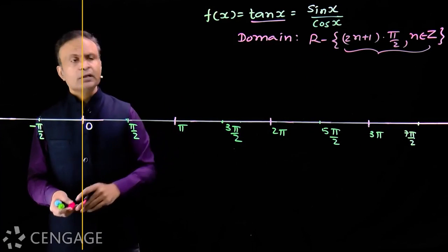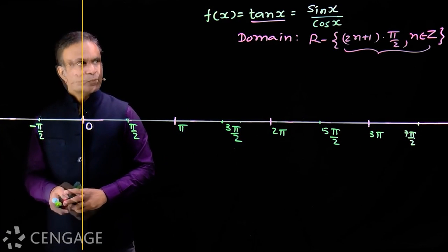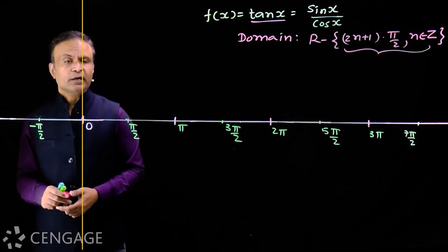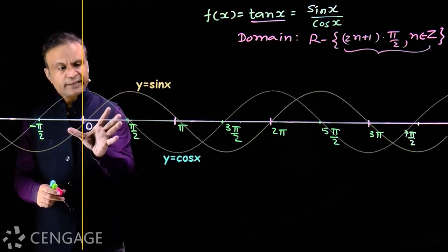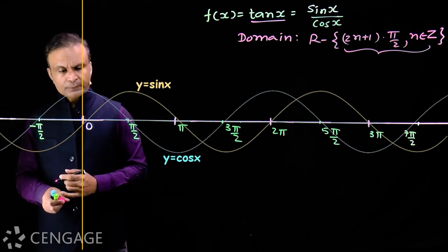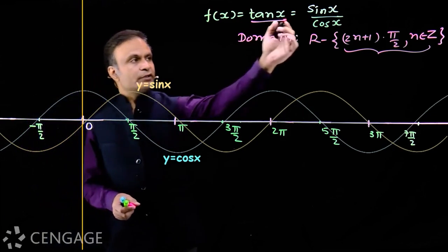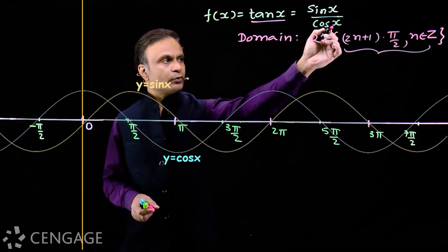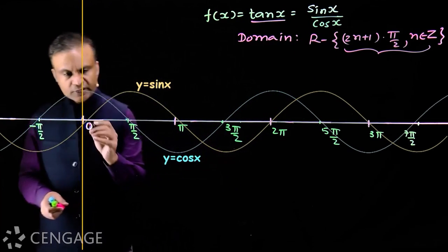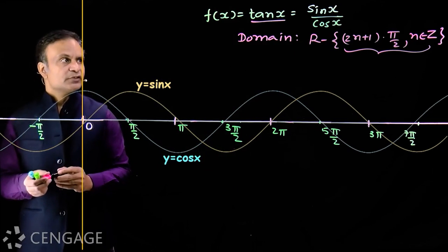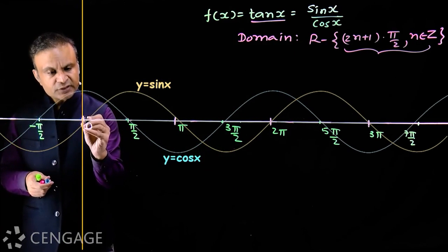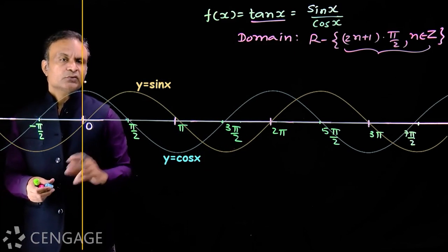To draw the graph of f(x) = tan x, we first draw the graphs of sin x and cos x. Starting at x = 0: tan(0) = sin(0)/cos(0) = 0/1 = 0. So the graph of f(x) = tan x passes through the origin.